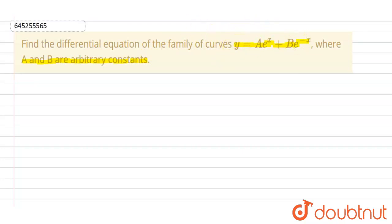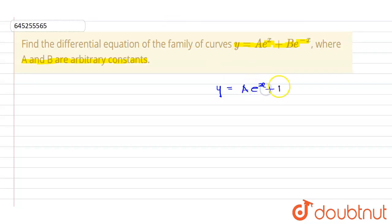Let me show you how we can do this. We have y = a·e^x + b·e^(-x). This is what we have.